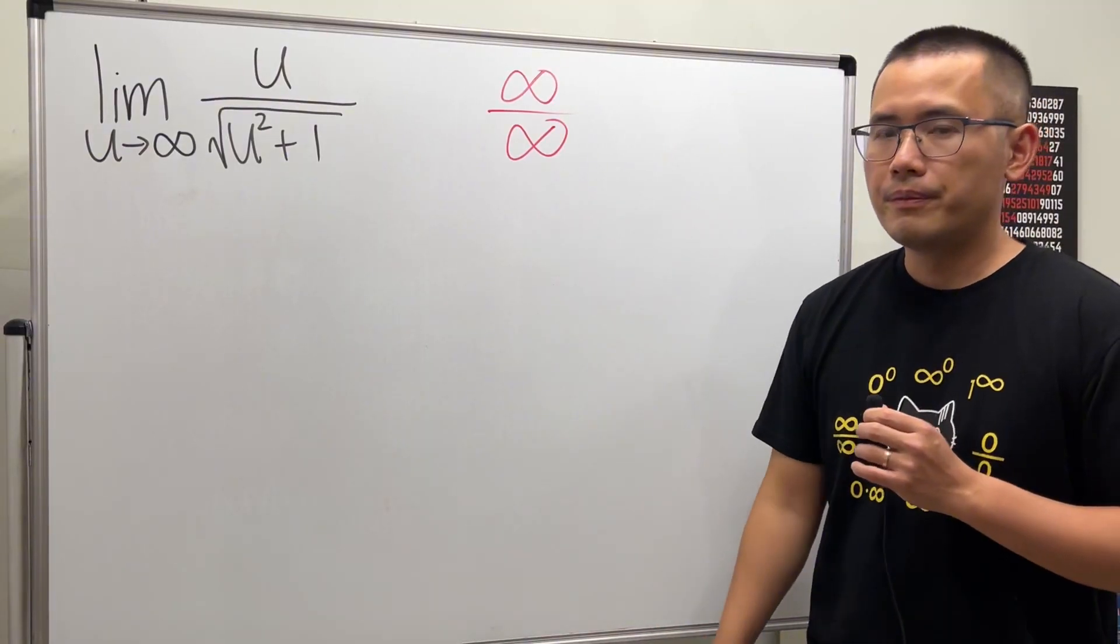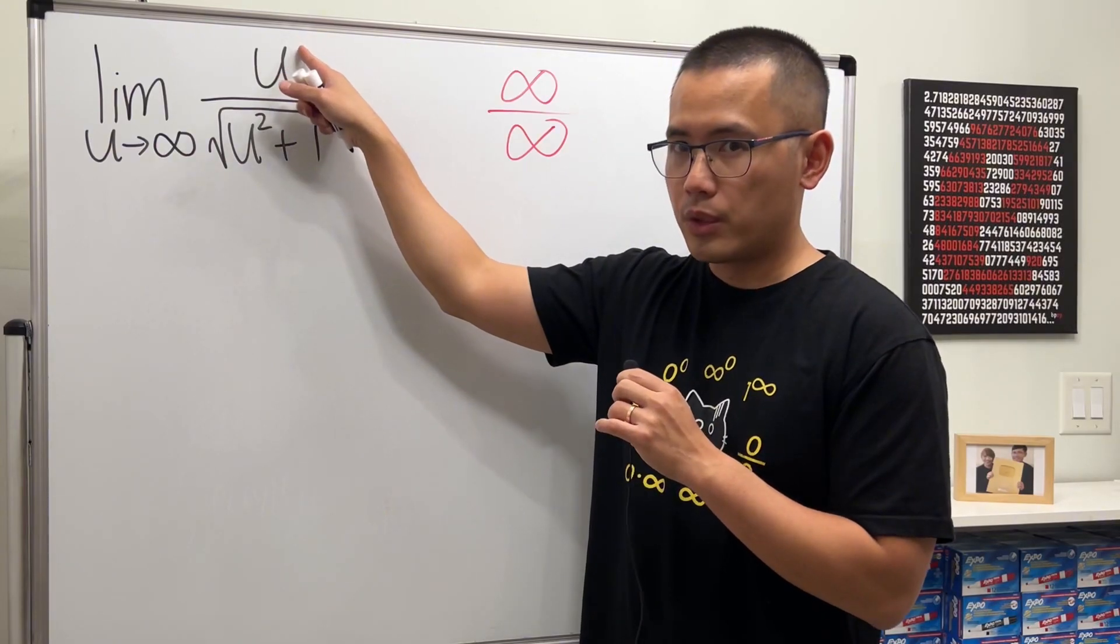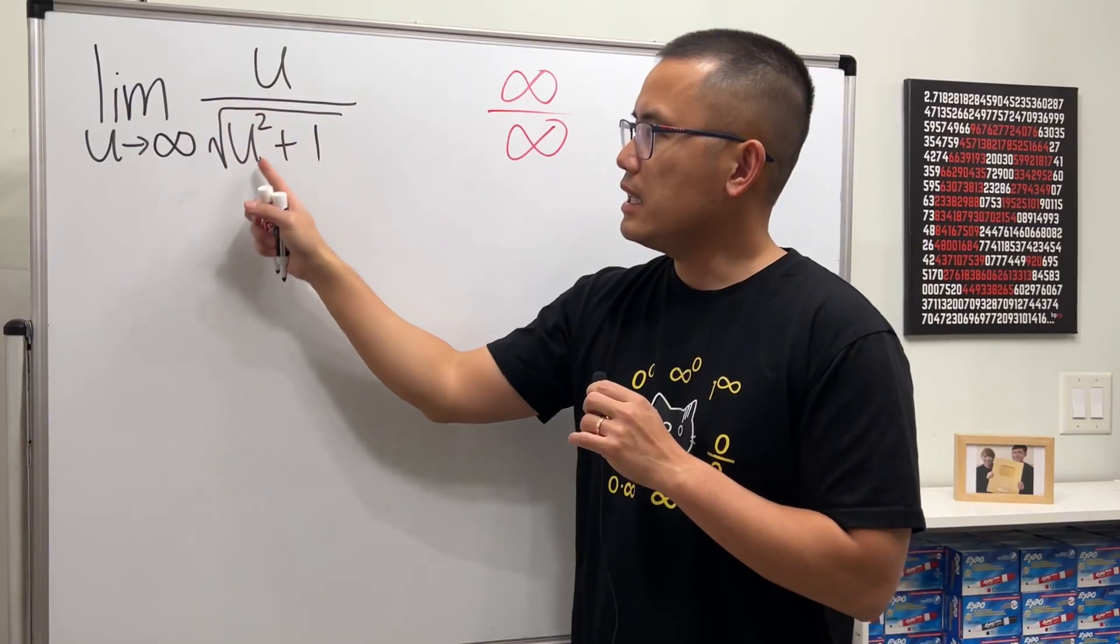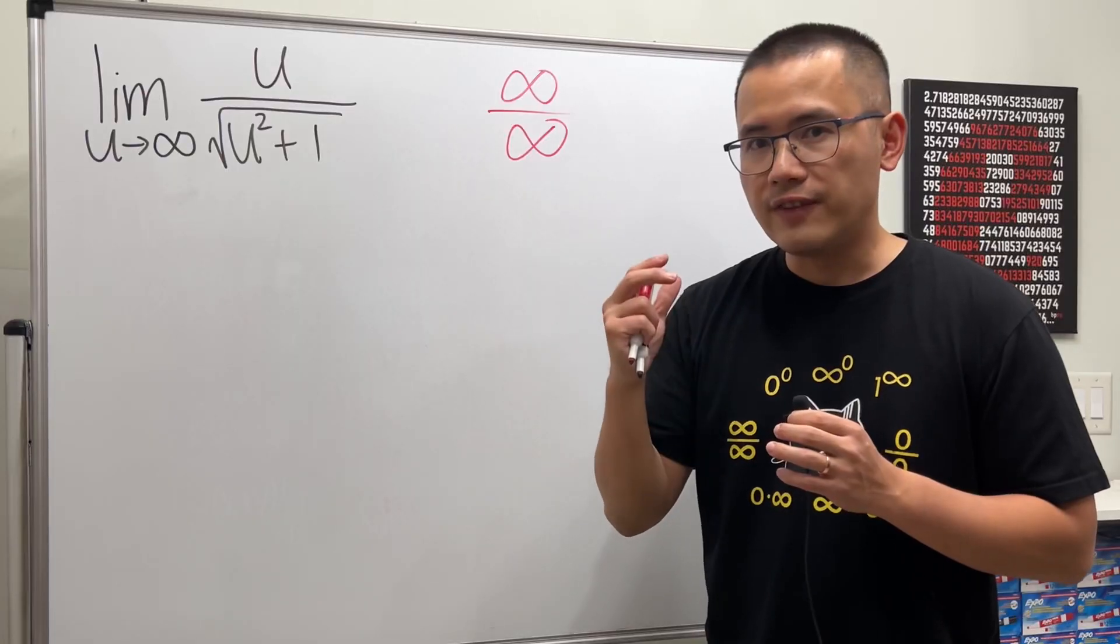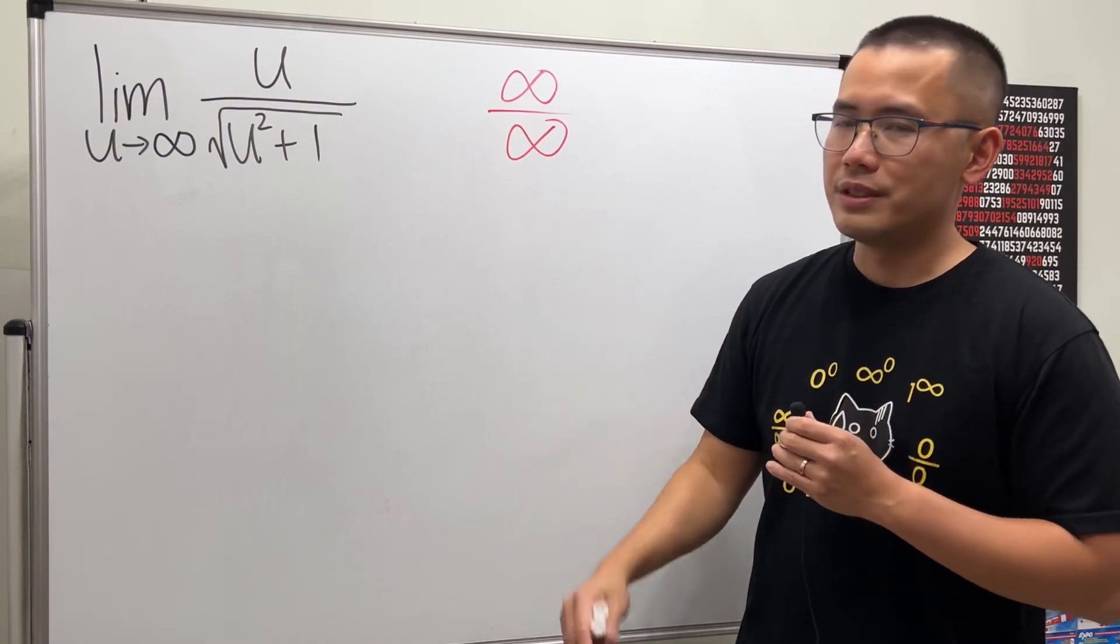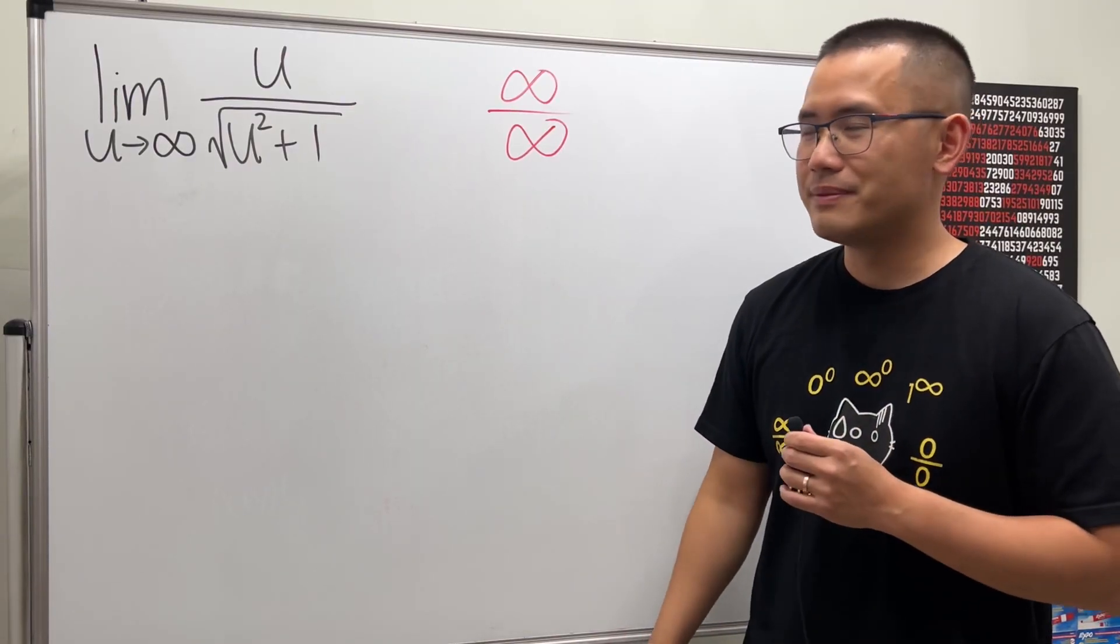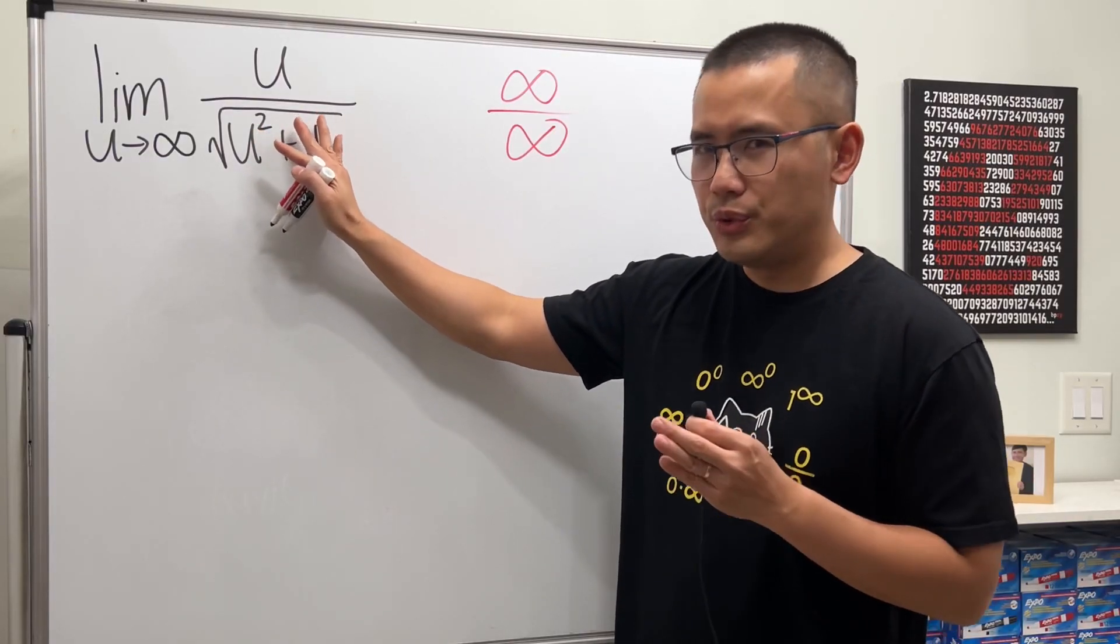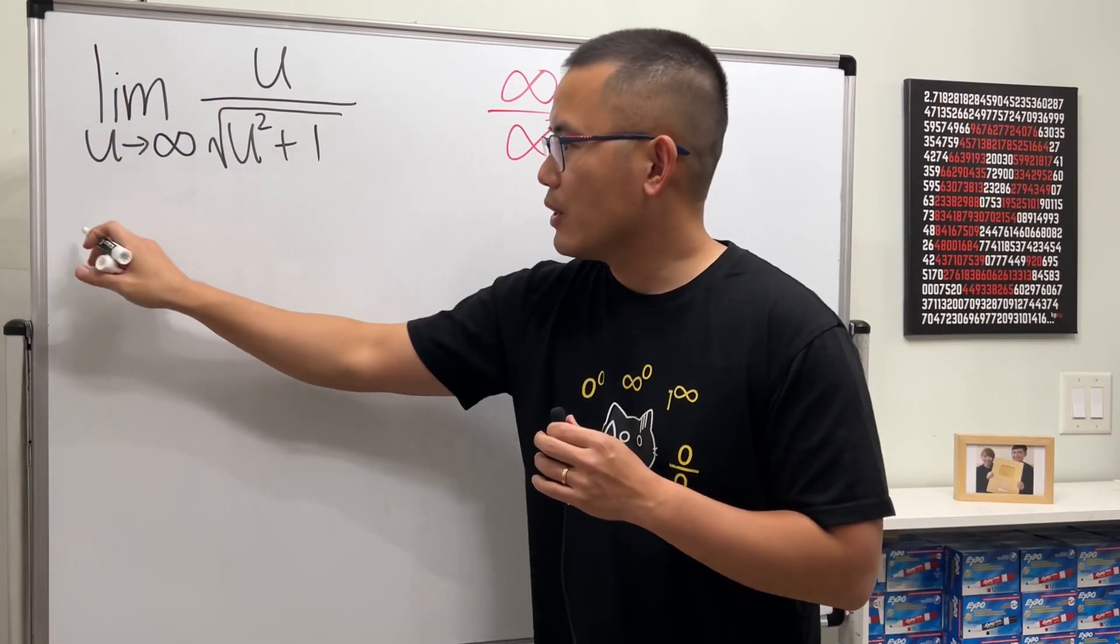So what do we do though? Well, in this case, notice that on the top we have u to the first power. On the bottom we have u squared, but that's inside of the square root. As u going to infinity, we can just divide the top and bottom by the highest power of u in this case. I'll show you another way to do it, but let's do the standard way first. Well, square root of u squared is the same as u to the first power, as u going to infinity. So I'm going to do this.